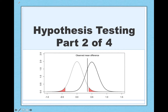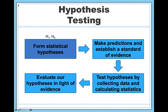Welcome to part two of our four-part miniseries on hypothesis testing. In our last video we talked about forming statistical hypotheses — the null hypothesis, which states that there's no effect, and the alternative hypothesis, which states that there is an effect. In this video we're going to focus our attention on establishing a standard of evidence, essentially determining what we would need to find in our study in order to be convinced that there's actually an effect or not.